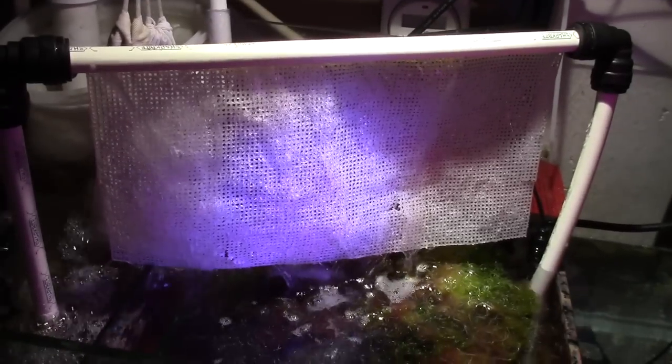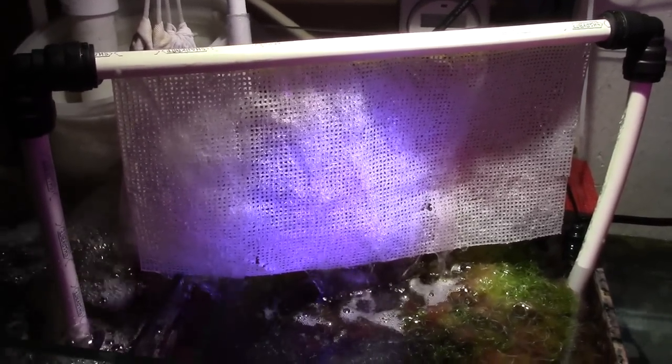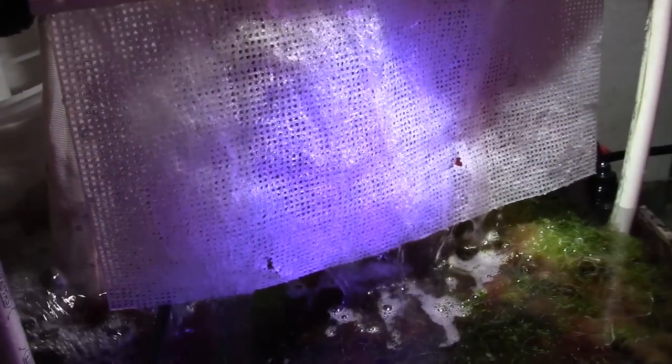My algae turf scrubber is actually gonna be on for 14 hours. Lighting schedule is gonna start at 4 or 5 PM and then cut off at 6 AM the next morning.